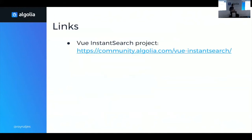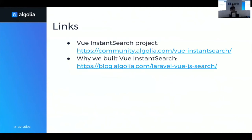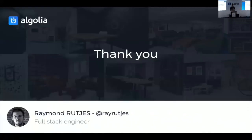A few links to finish: the Vue InstantSearch project can be found on our community website. There's also a more detailed blog post about the reasons why we actually built this library, so you can go check it out. My handle on Twitter, if you want to chat about anything, is RayRatches — you can find me on Twitter and GitHub. Thank you. I think we can have some questions if you have any.